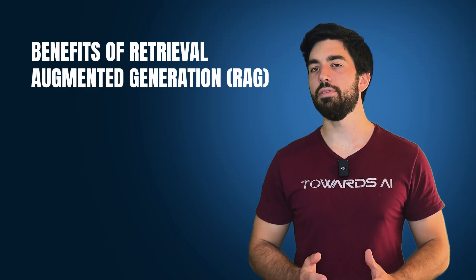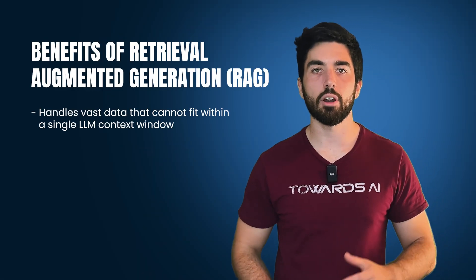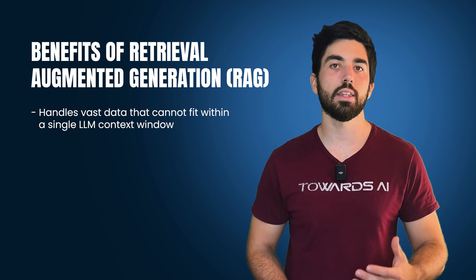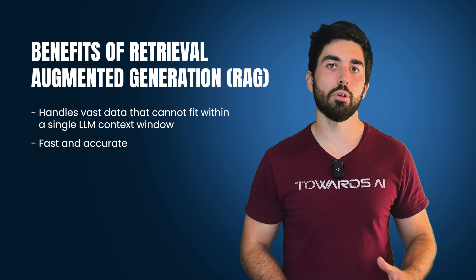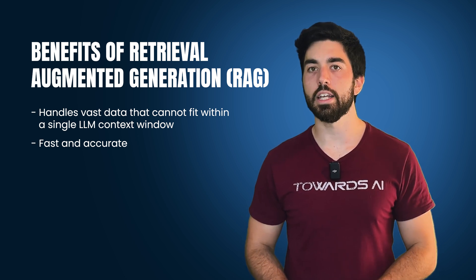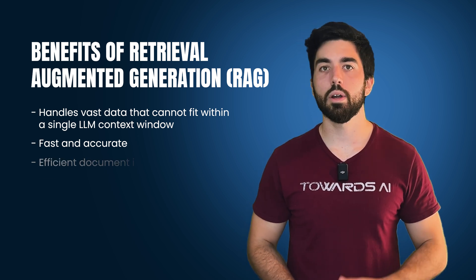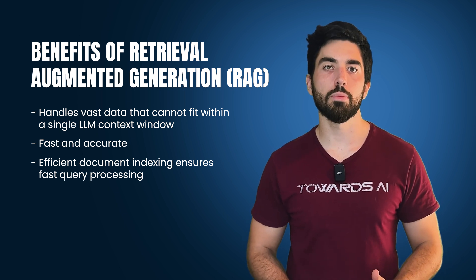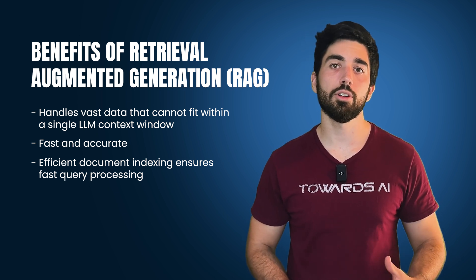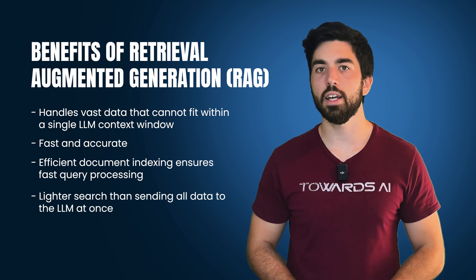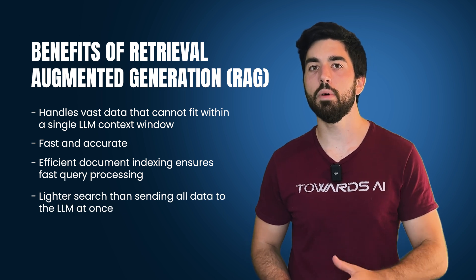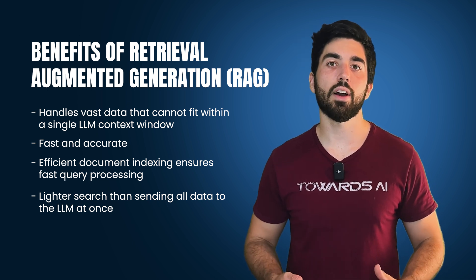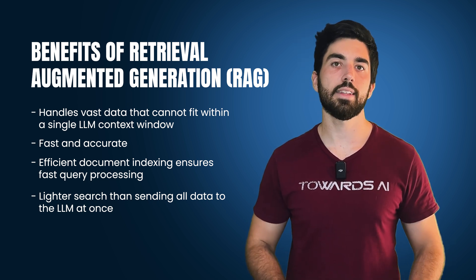So what are the benefits of RAG? RAG is an excellent technique for handling more extensive collections of documents that cannot fit within a single LLM context window. Well-made RAG systems are super fast and accurate. Queries to a database with multiple documents are processed quickly due to efficient document indexing methods, and when dealing with lots of data, this search process is much lighter compared to sending all the information directly to an LLM.